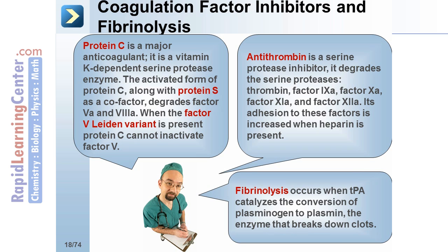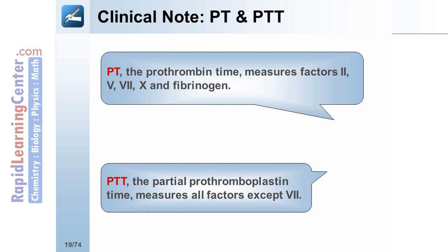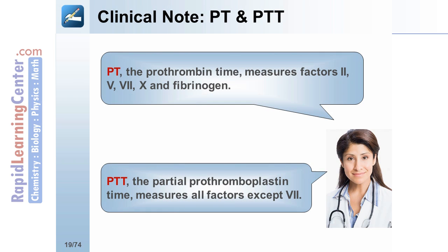Fibrinolysis occurs when TPA catalyzes the conversion of plasminogen to plasmin, the enzyme that breaks down clots. On a clinical note, PT, the prothrombin time, measures factors 2, 5, 7, 10, and fibrinogen. PTT, the partial thromboplastin time, measures all factors except 7.